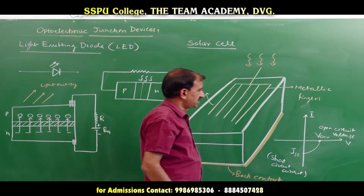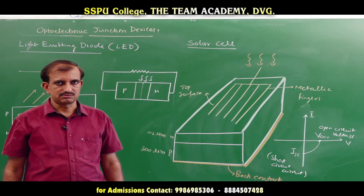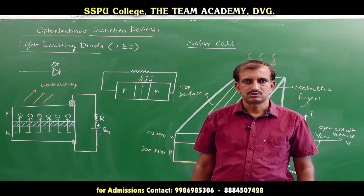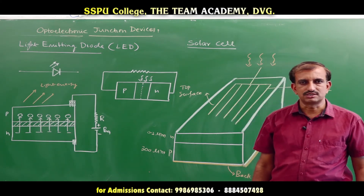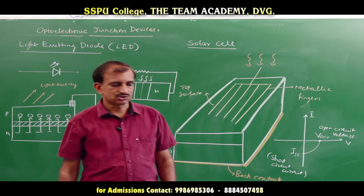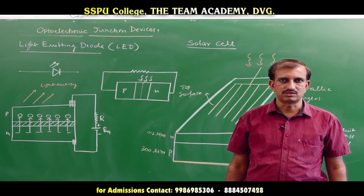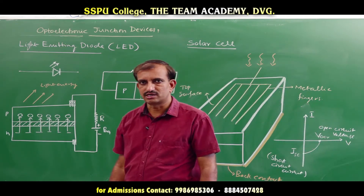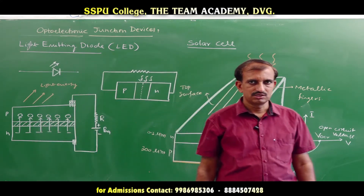The solar cell converts light energy into electric energy and is used in space vehicles, electronic equipment, street lamps, traffic signals, and remote sensing areas where there is no electric power supply. Solar cells convert solar energy — a free energy available in nature — into electric energy.